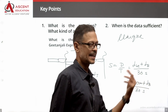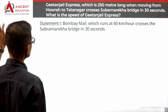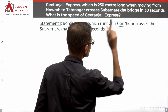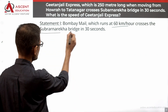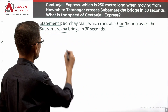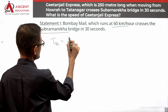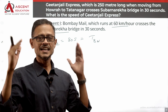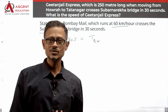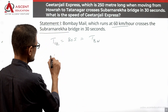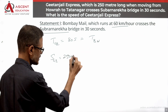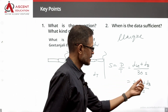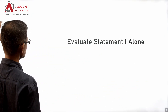Let's look at Statement 1. Statement 1 tells us that Bombay Mail runs at 60 km per hour and crosses the same Subarnarekha Bridge in 30 seconds. So the time taken by Geetanjali Express is 30 seconds, and the time taken by Bombay Mail is also 30 seconds. They cross the same bridge. The speed of Geetanjali Express equals (250 + bridge length) / 30. The speed of Bombay Mail equals (length of Bombay Mail + bridge length) / 30 = 60 km per hour.